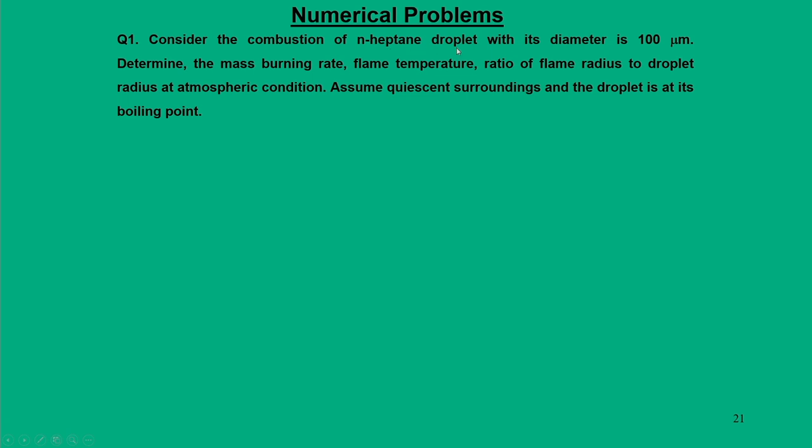This concludes the theoretical part of droplet burning, which discusses the combined role of heat and mass transfer during the burning of a droplet. We will now discuss a simple numerical problem based on the understanding of droplet burning. We will consider the combustion of an n-heptane droplet.